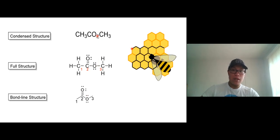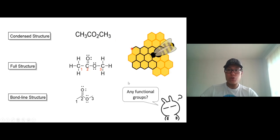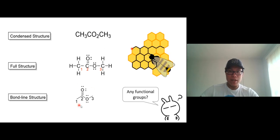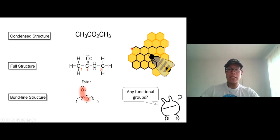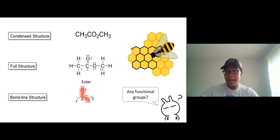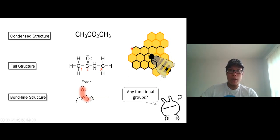If you can read from a condensed structure or full structure, you can convert to a bond line structure easily. But the problem is students have a hard time reading these two structures. Before we go further — what functional group is this? C double bond O and O — that's an ester. You've probably seen C double bond O and OH — that's carboxylic acid. This is ester: C double bond O and O.